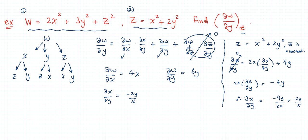Now we can solve: dw/dy equals dw/dx (which we found to be 4x) times dx/dy (which we found to be negative 2y over x) plus dw/dy (which we found to be 6y). Keeping z as a constant and simplifying, the x's cancel, so you get negative 8y plus 6y, giving you negative 2y as your final answer.